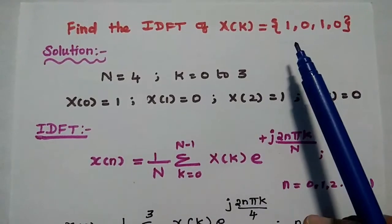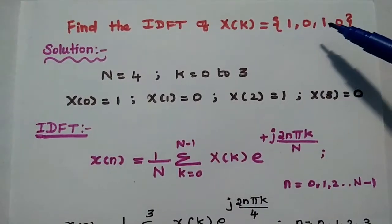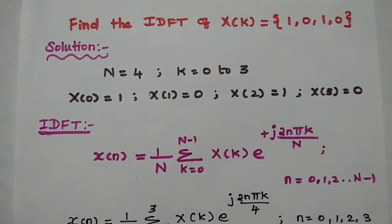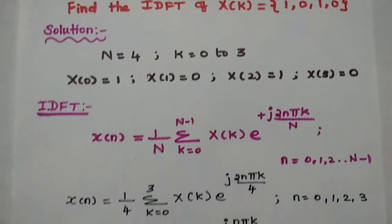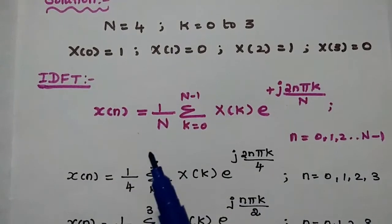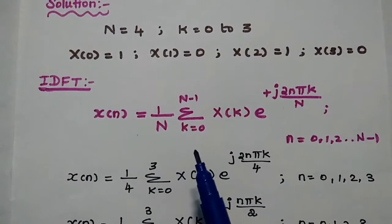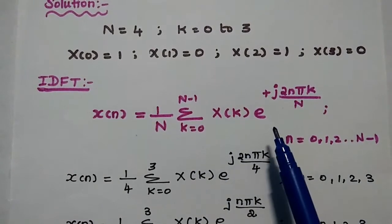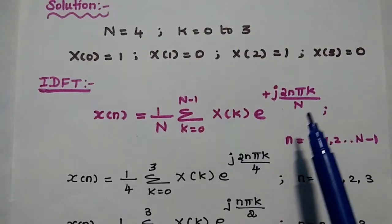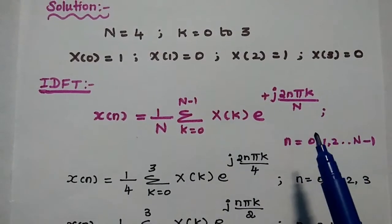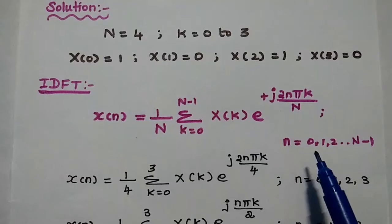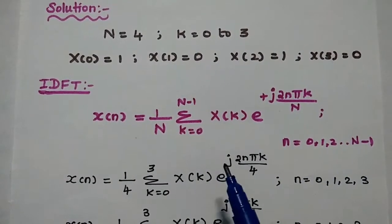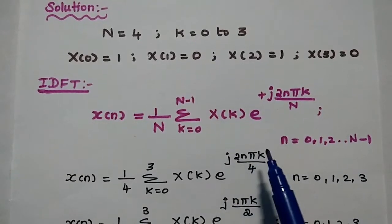So X(0) = 1, X(1) = 0, X(2) = 1, and X(3) = 0. Then we have to write the IDFT formula: x(n) = (1/N) × summation from k=0 to N−1 of X(k) × e^(+j2πnk/N), where n varies from 0 to N−1. This is the formula of the inverse discrete Fourier transform.